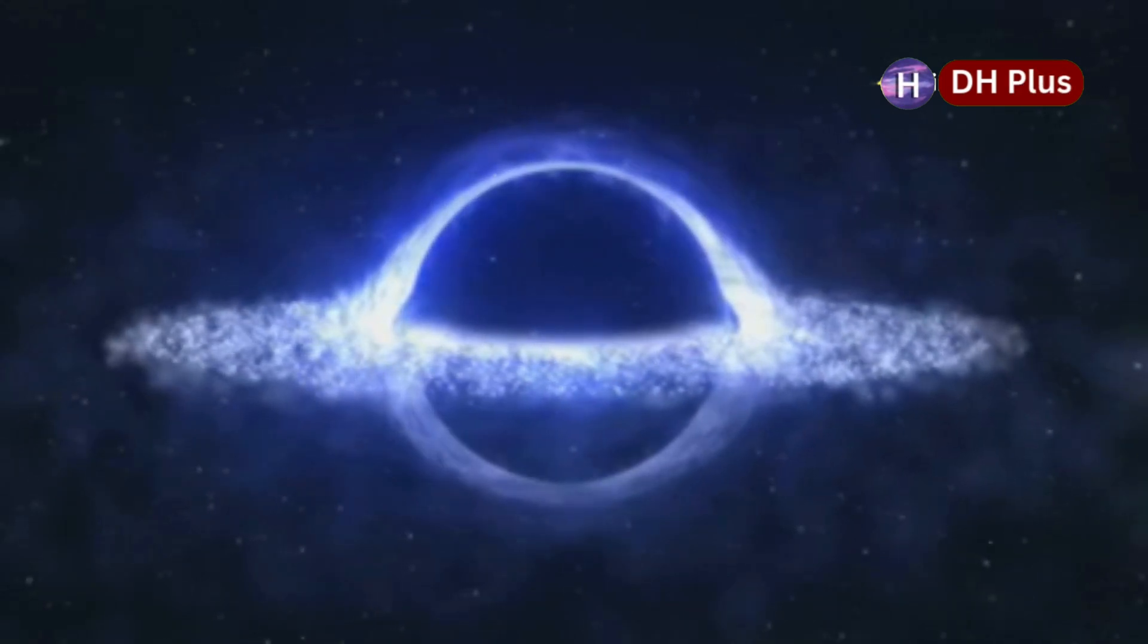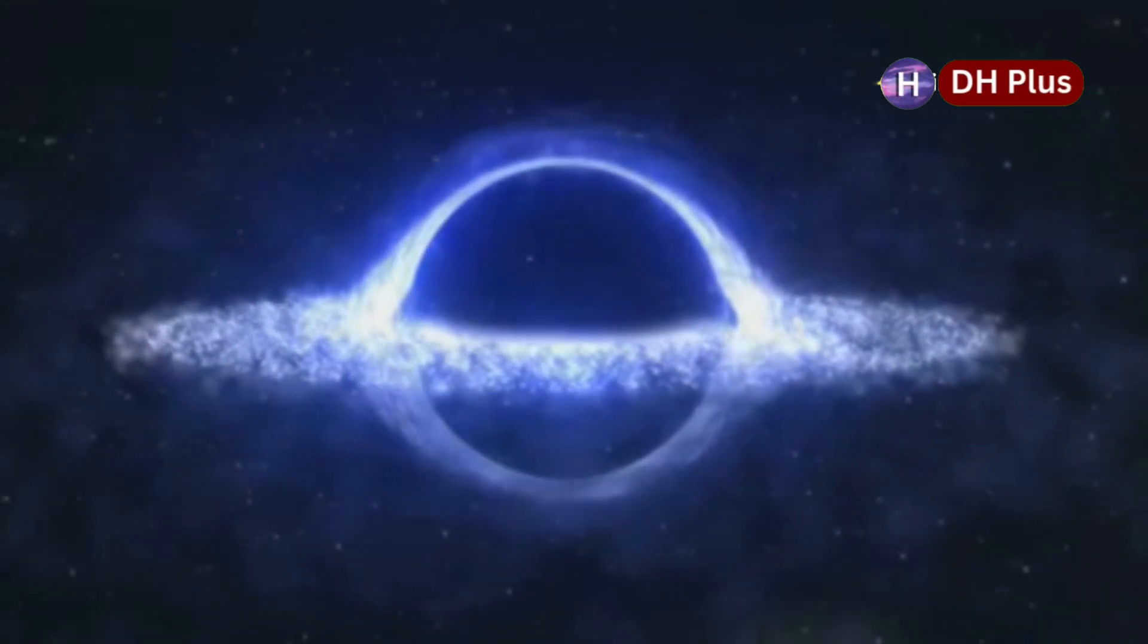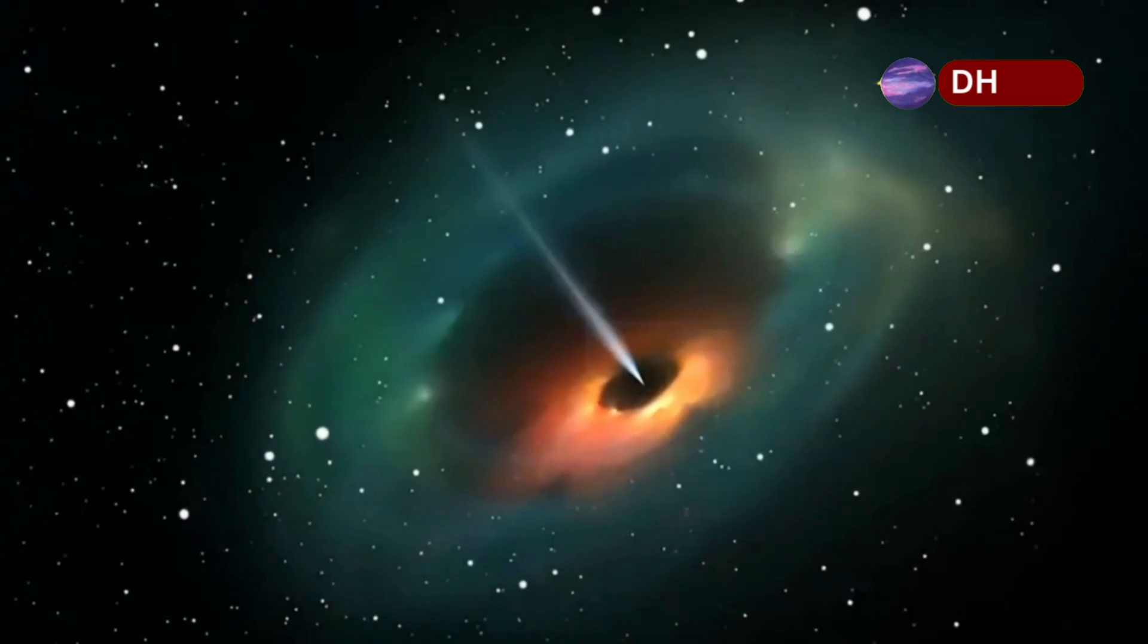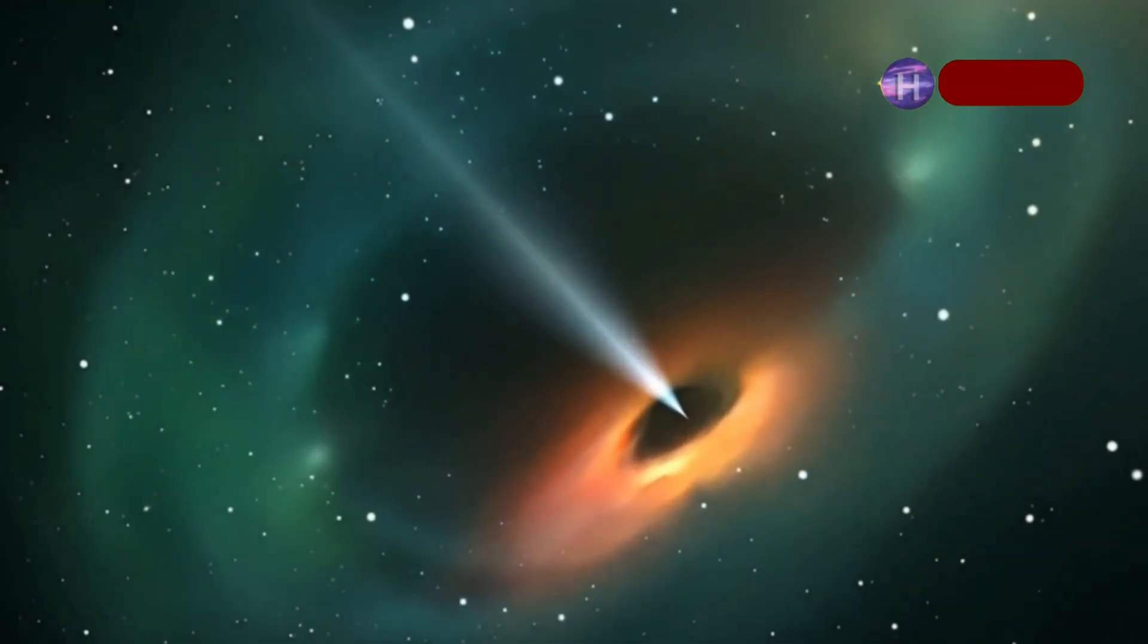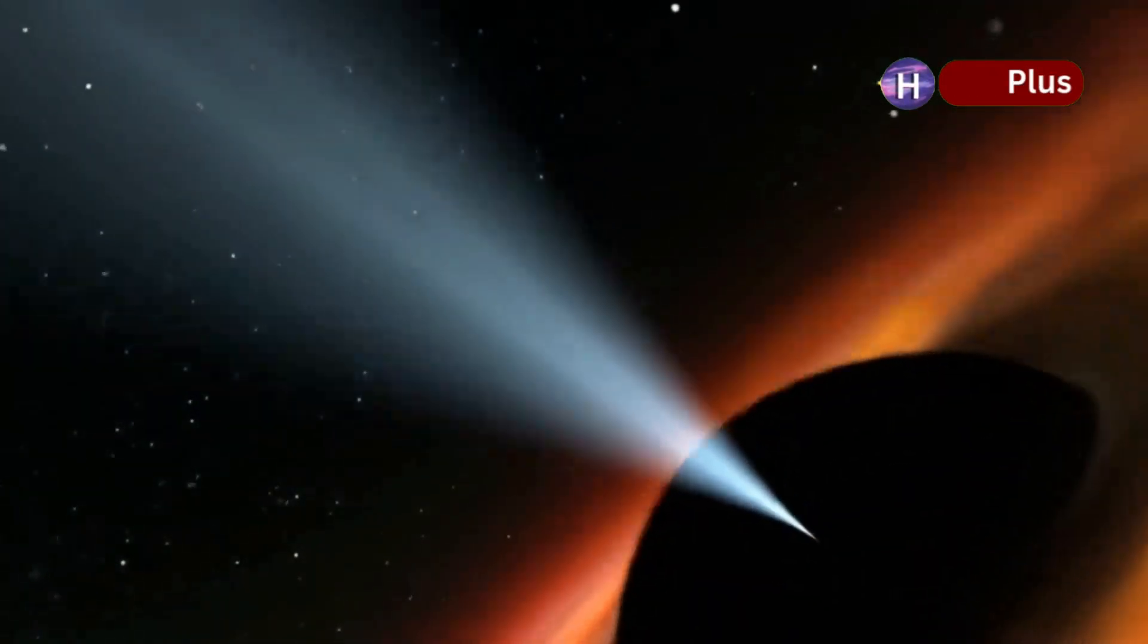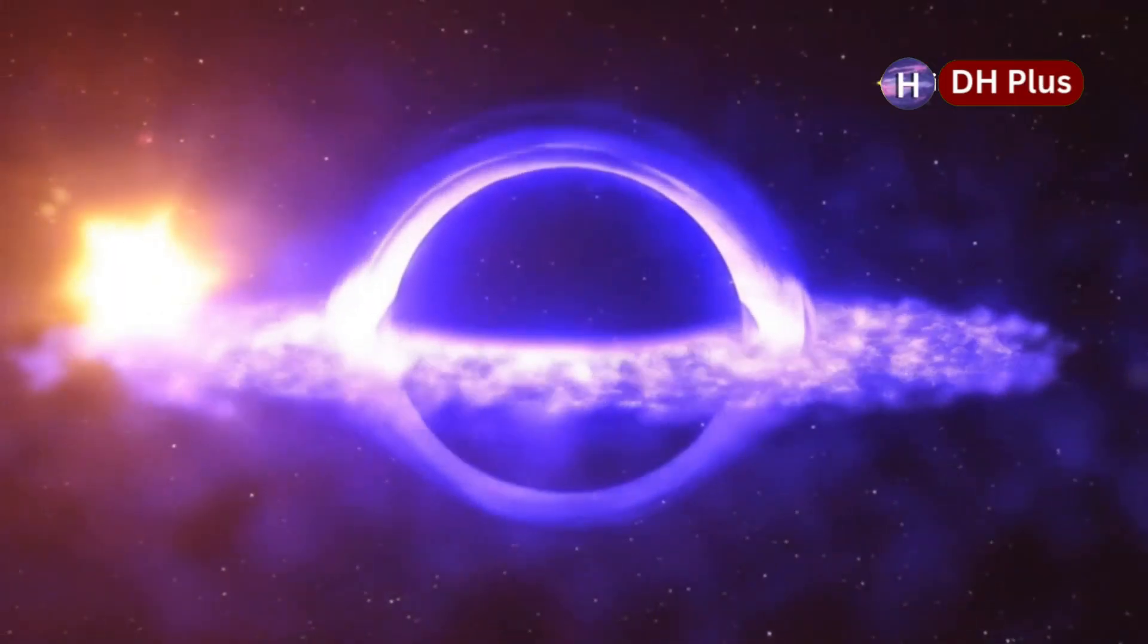But let's pause and take in the scale. If our sun were the size of a marble, this black hole would be a solid sphere almost 3 kilometers wide, and yet right now, it's barely feeding. Just 1% of what it could consume.